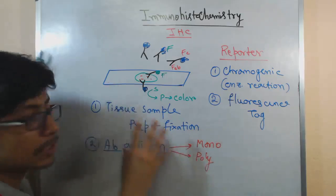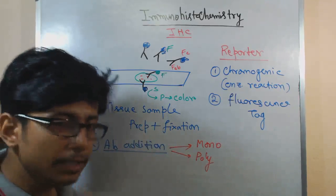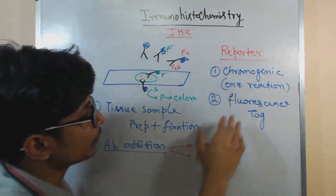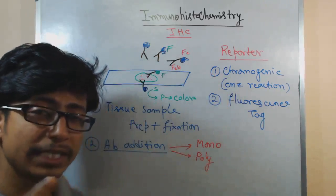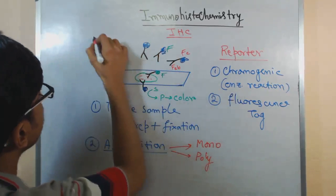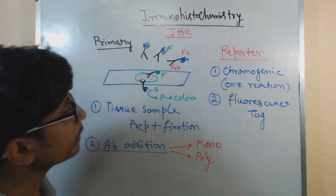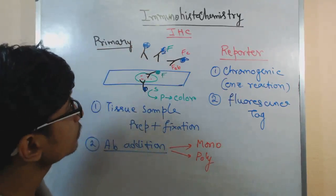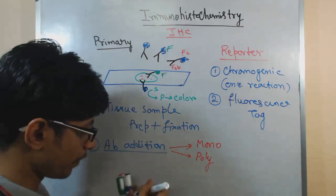That is how we can detect the presence of certain antigen in the tissue sample. This type of antibody — when attached with enzyme or fluorophore tag — once it is interacting directly with the antigen, we call it the primary antibody. Sometimes we use two different antibodies for this reaction instead of using one direct antibody — first we use another type of antibody.